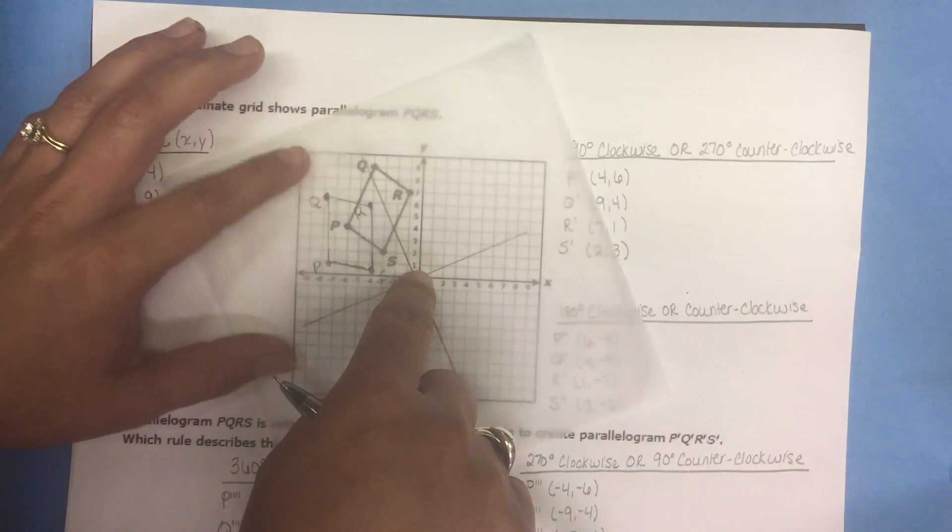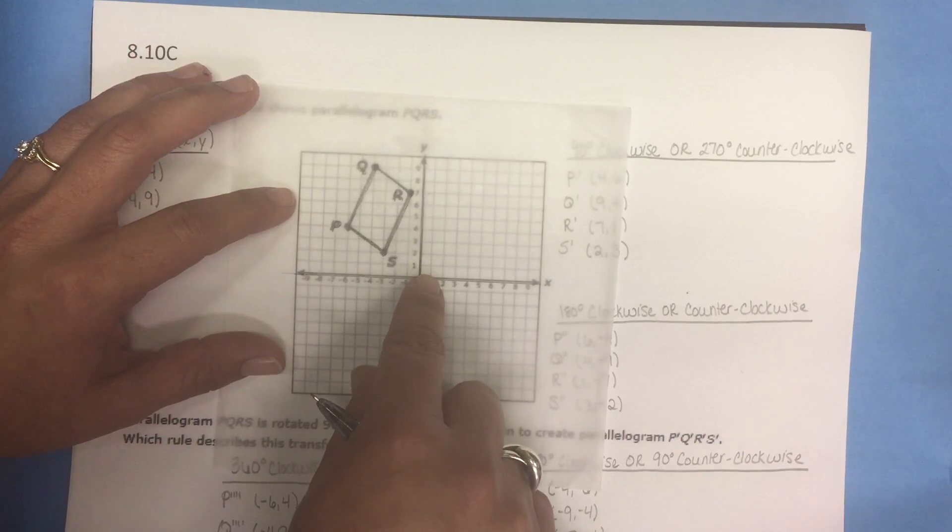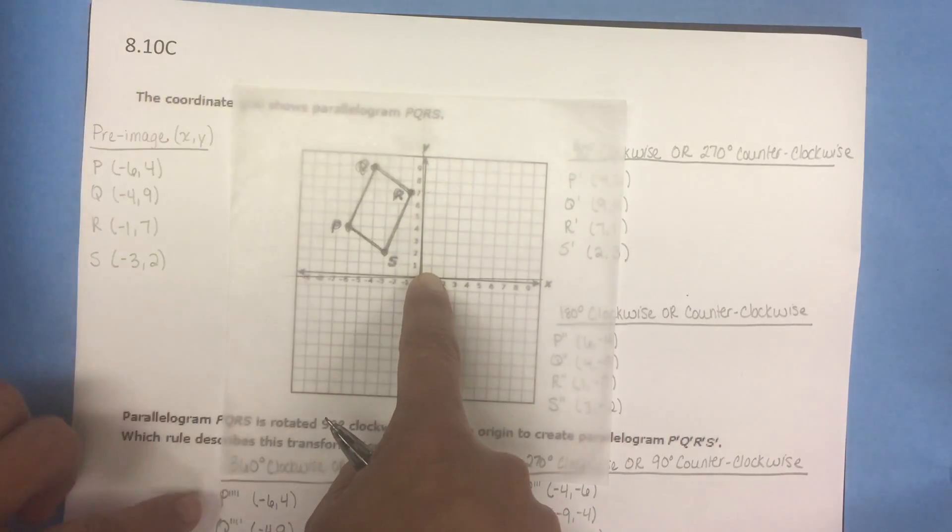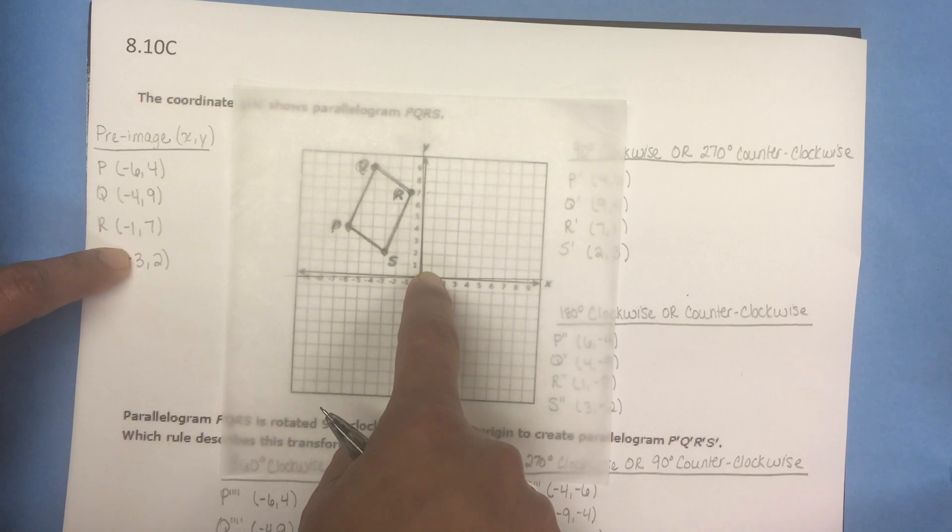If we rotate one more time 90 degrees for a total of a 360 degree rotation, we're gonna end up right where we started. So the coordinates of a 360 degree rotation are the exact same as the original figure.